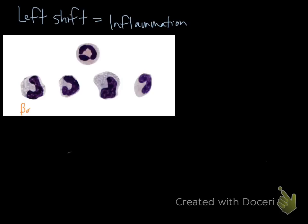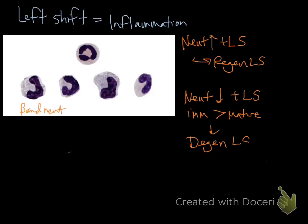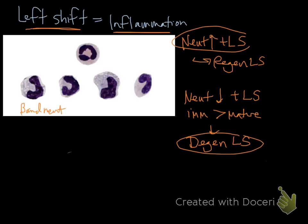The presence of band neutrophils — which have that horseshoe shape — equals inflammation. When neutrophil numbers are increased and you have a left shift, that's called a regenerative left shift, and it's an appropriate response to inflammation, meaning tissue is pulling bands from the storage pool. If you have a decreased neutrophil count plus a left shift, or if immature neutrophils are greater than mature neutrophils, this is called a degenerative left shift. This is bad — it means tissue neutrophils are being used up faster than the bone marrow can make them, and it tends to be a poor prognostic indicator, except in cattle. A left shift always equals inflammation; regenerative is better, degenerative is not so great.